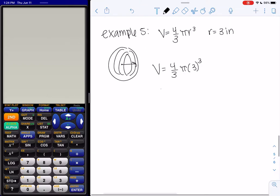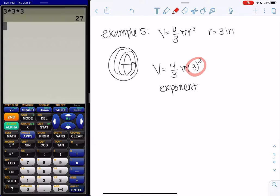So our first step on this one would be three to the third power. So you could do three times three times three, right? A third power means three times. Or you can hit the power button.